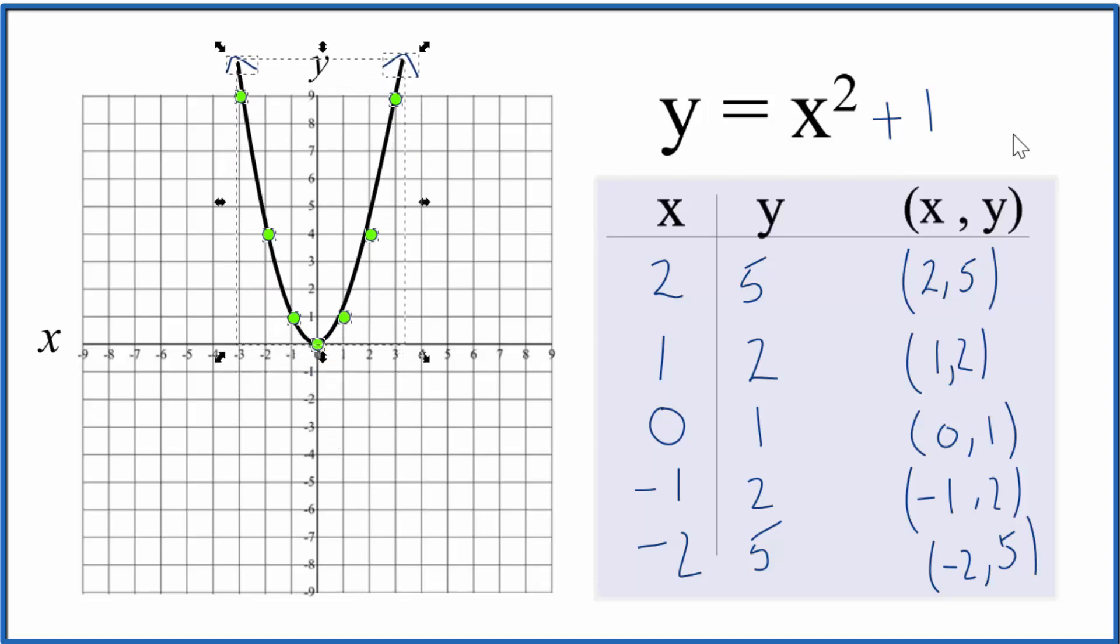So in answer to our original question, the graph for the equation y equals x squared plus 1, that's just right here. And we could put values in for x, get corresponding values for y, and graph them, and this will be our equation.